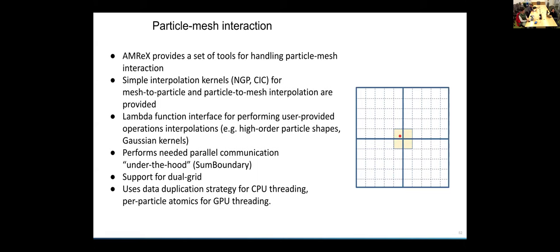A lot of the codes that are using AMRx for the particle stuff are doing particle-mesh operations. We provide a set of tools for handling that. If you're doing common interpolation operations, for example, nearest grid point or cloud in cell like linear interpolation, we just provide those routines. We also have a lambda function interface where users can write your own interpolation kernel and pass that in and AMRx will do the operation using your custom kernel for you. So if you want to do high order particle shapes or if you want to do Gaussian or something like that.